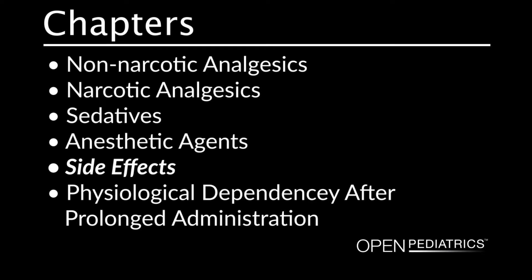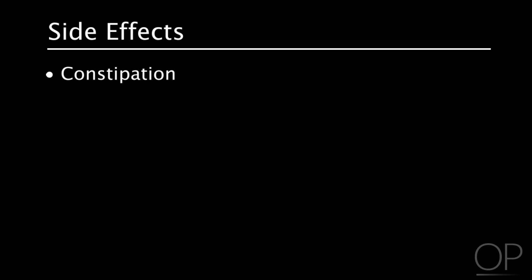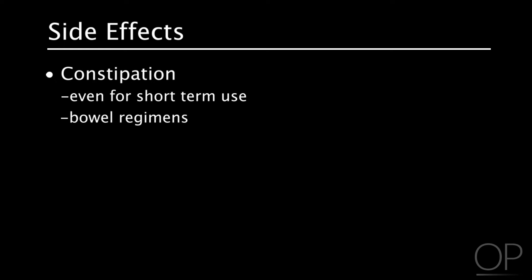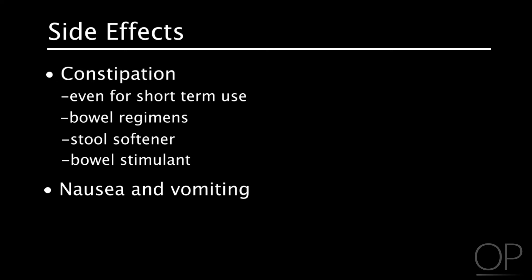Side effects. Constipation, which can be severe, is a common problem for patients taking opioid pain medications. This may be problematic even for patients taking the drugs over a short term. Bowel regimens can be put in place to avoid constipation. There are many options to help alleviate constipation such as a stool softener or bowel stimulant. Nausea and vomiting are common side effects following opioid analgesia. An antiemetic can be used for patients who experience this discomfort.